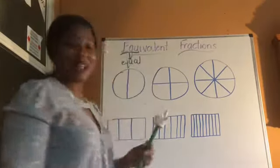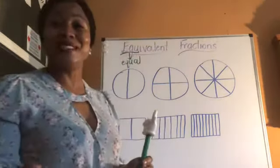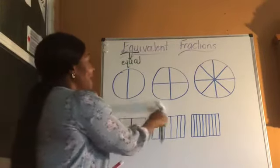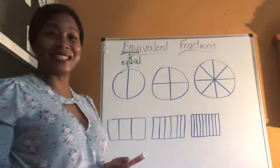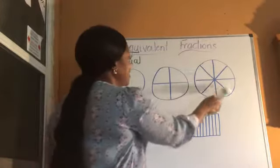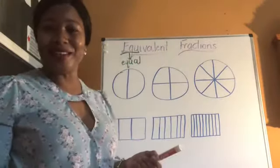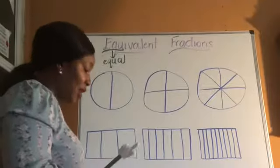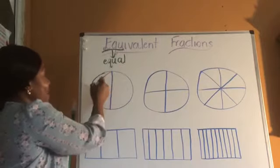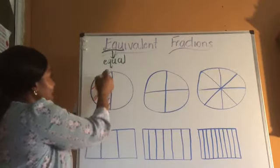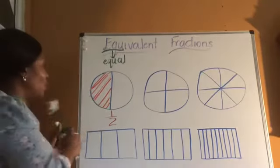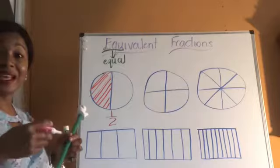Now on the board I have some diagrams, and you know I like to show you shapes before I go into actual numbers. I have three circles at the top but notice they are all cut into different sizes. Think of it as a pizza or, for my Jamaican peeps, a bulla. So if I cut my bulla or my pizza in two parts and I eat one part and give you one part, it means we both got one half — one part out of two.